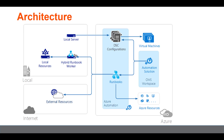From an architecture perspective, this is how the high-level architecture of a hybrid runbook worker looks. On the right-hand side are all the resources related to the automation account in Azure. Within the automation account you have runbooks that work against various Azure resources. The runbooks belong to the automation solution under the OMS workspace, and there are DSC configurations as well. A hybrid runbook worker is a server that sits locally inside your on-premises data center or in AWS, and through it you can access all your local resources on the network.